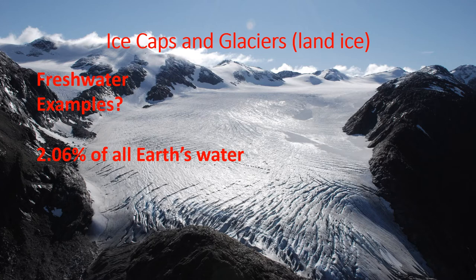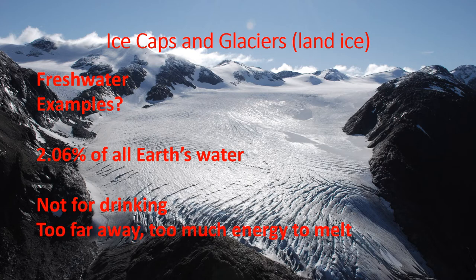2.06% of earth's water is frozen in the ice caps and glaciers. So almost 97% was in the ocean and then another 2% is frozen. We don't typically use this as a source of drinking water because, although it is fresh water, a lot of times where this ice is, it's very far away from where the humans are — it's too cold for us to live where the ice is. It takes a lot of energy to melt it at the scale we would need, so ice caps and glaciers are just not a very good option because of the expense and the energy required.